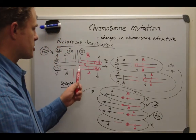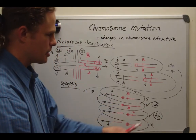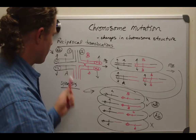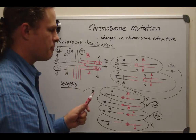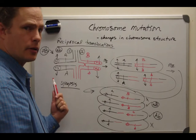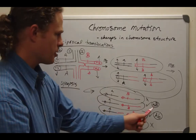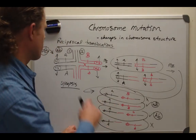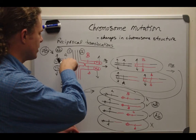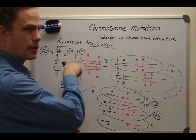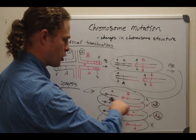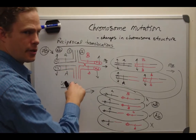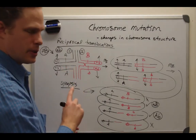So with a single crossover in this region we get some recombinants. Notice these are genetically the same recombinants as in the previous video with single crossovers in the other region — but the structures are different. Here we have little a with big B on normal structures, whereas when the crossover was in the other region, little a was placed onto a translocated structure.